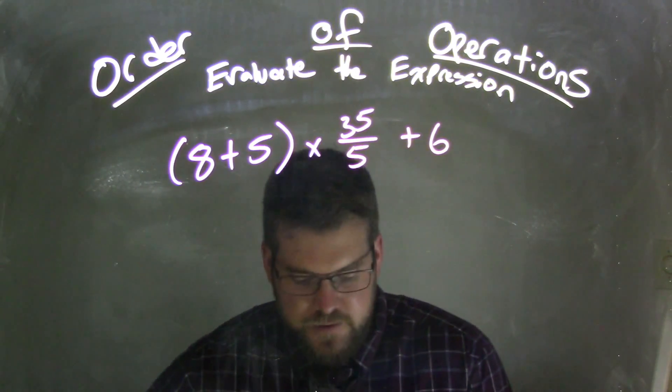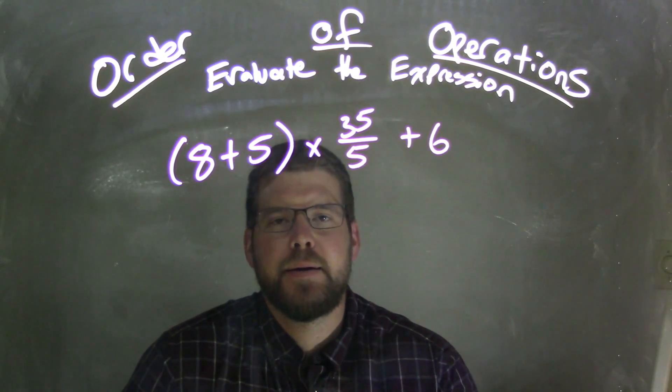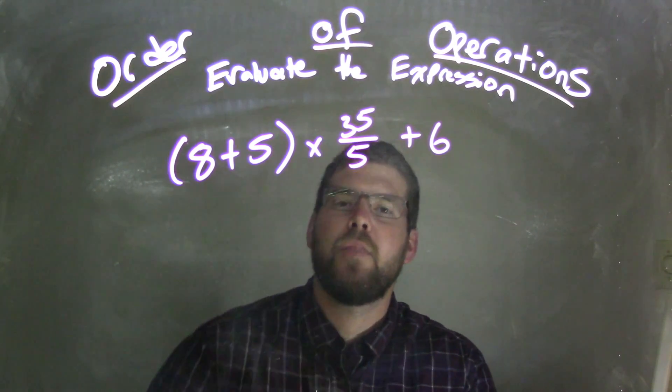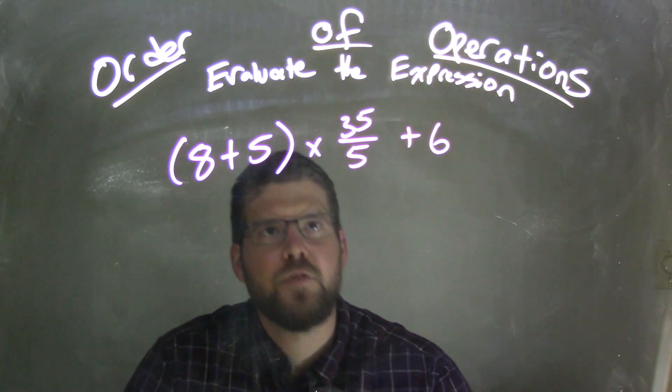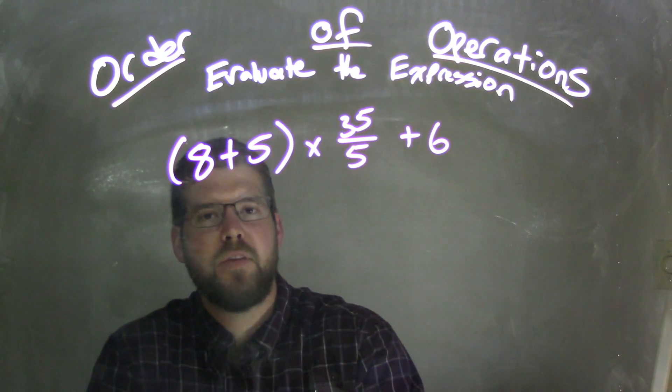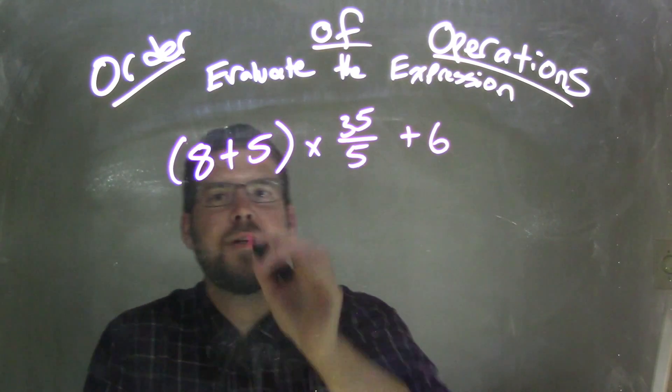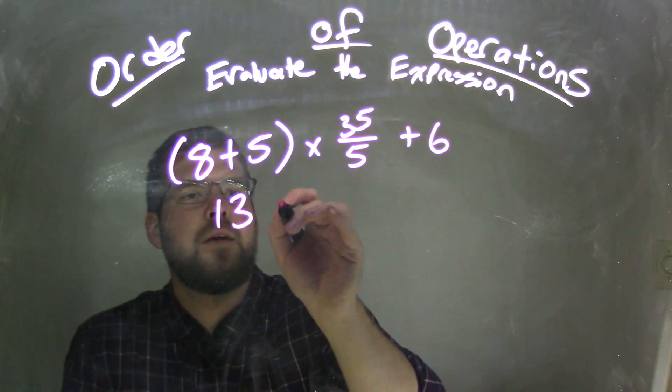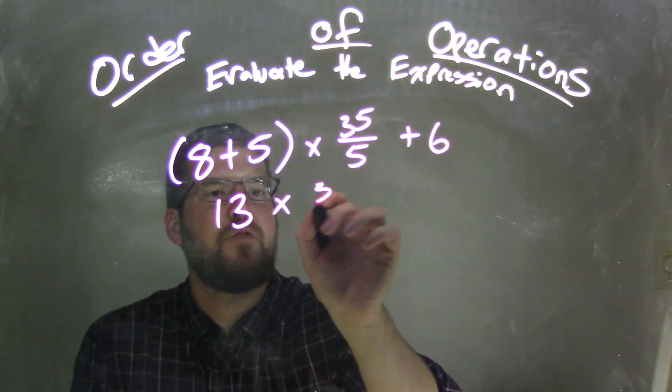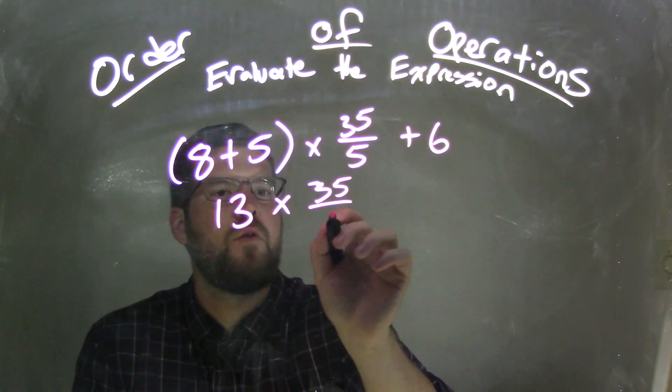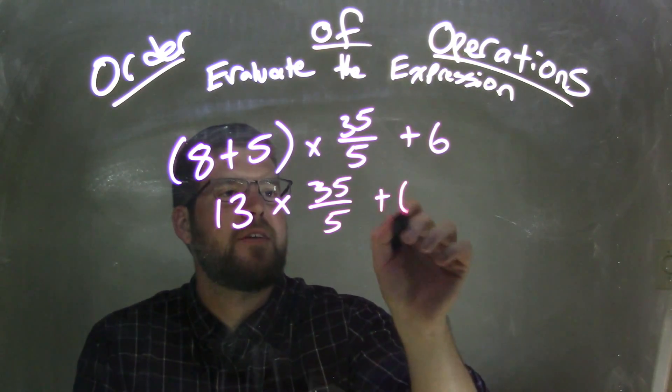So 8 plus 5 first. What do we deal with? We have the parentheses, always parentheses first. What's inside of the parentheses? 8 plus 5 comes out to be what? Think about it, 13 times 35 over 5 plus 6.